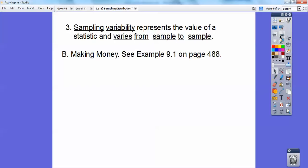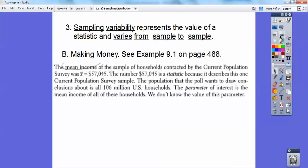So for example, here's making money. This is example 9.1 on page 488. The mean income of a sample of households contacted by the current population survey was—see, this says x bar, so that's the sample mean—$57,045. The number $57,045 is called a statistic because it describes this one current population survey sample. The population that the poll wants to draw a conclusion about is 106 million U.S. households, and so the parameter of interest is the mean income of all the households. So the parameter is the whole population. And we usually don't know the value of the parameter, almost always. So we do a sample, which is a statistic. Remember, statistics comes from samples and parameters come from populations.